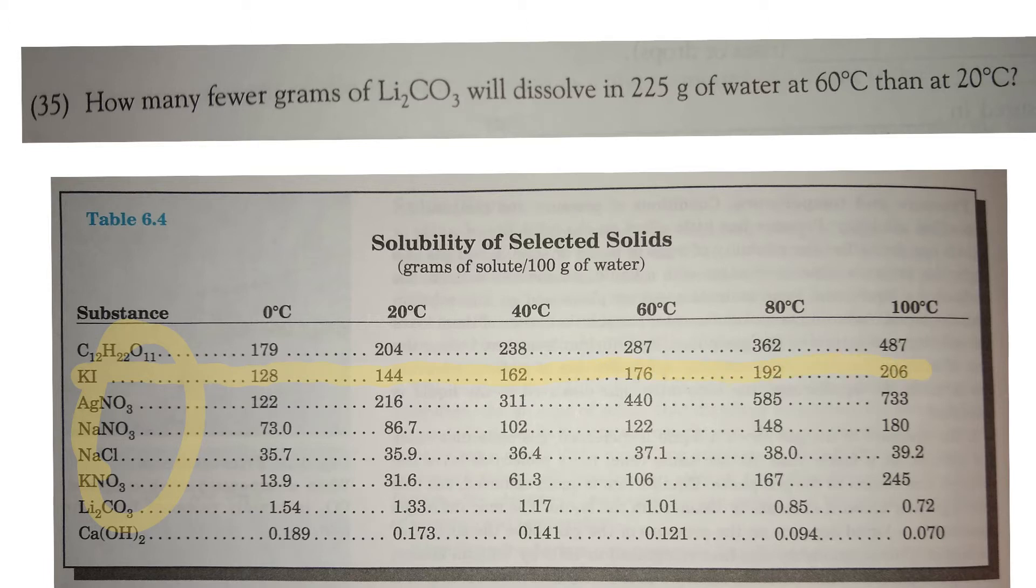This probably makes sense if you've ever tried to dissolve sugar in iced tea. You'll notice that it doesn't dissolve very well, right? But if you have warmer water or hot tea, then you can dissolve a lot more of that sugar and it'll dissolve a lot easier.